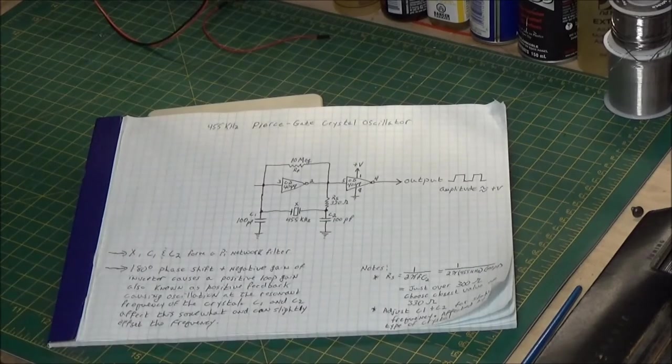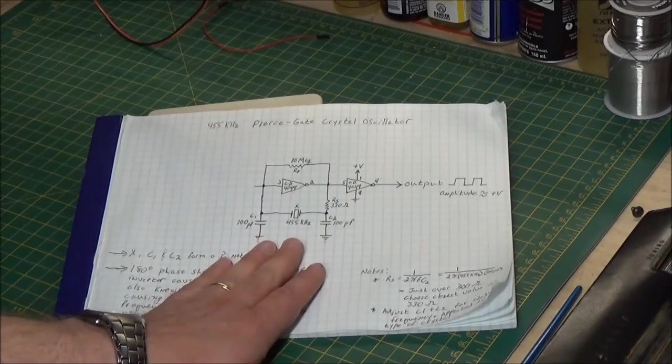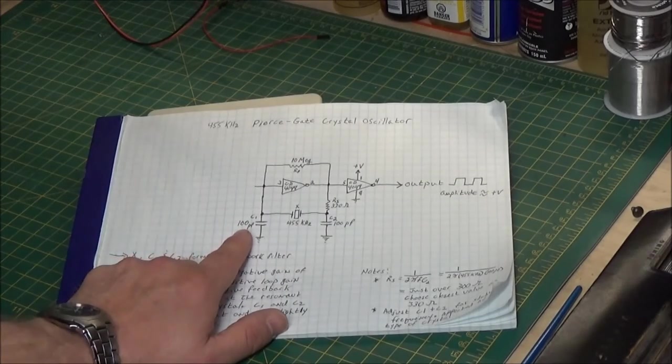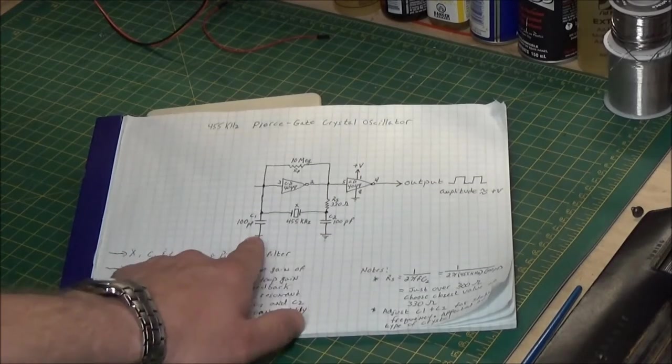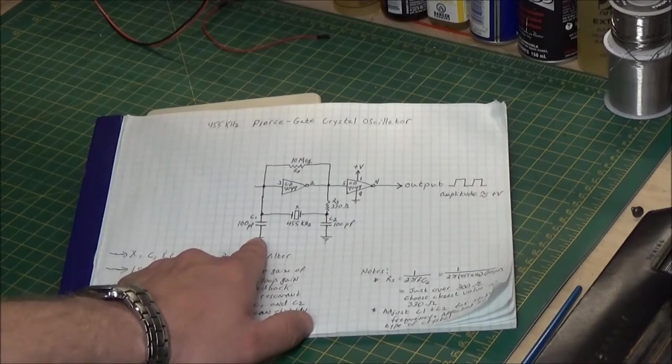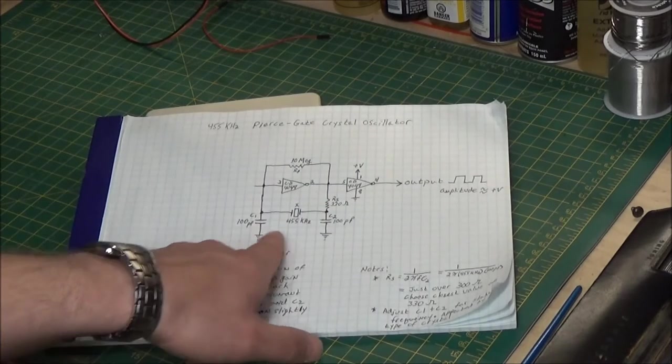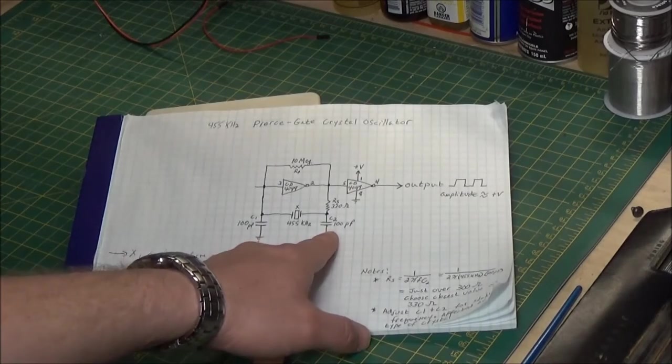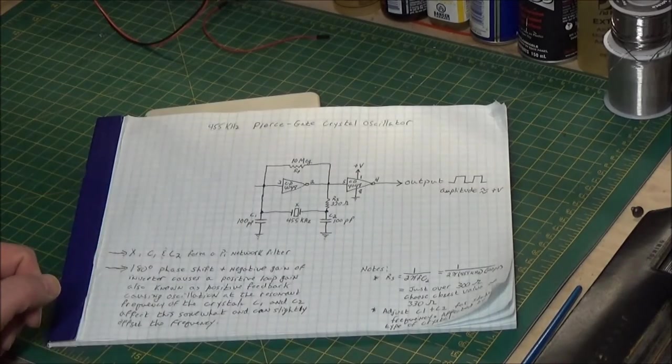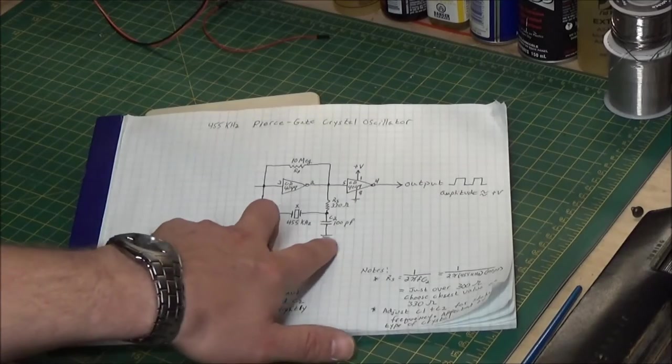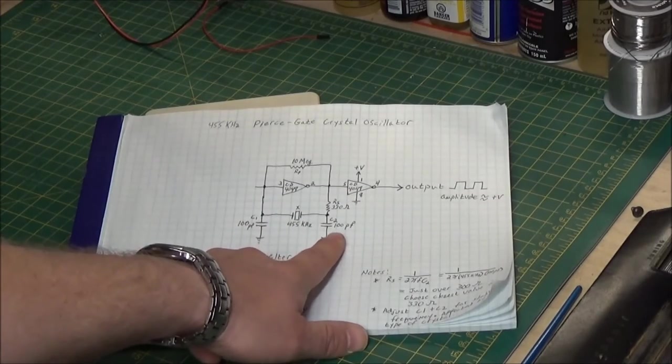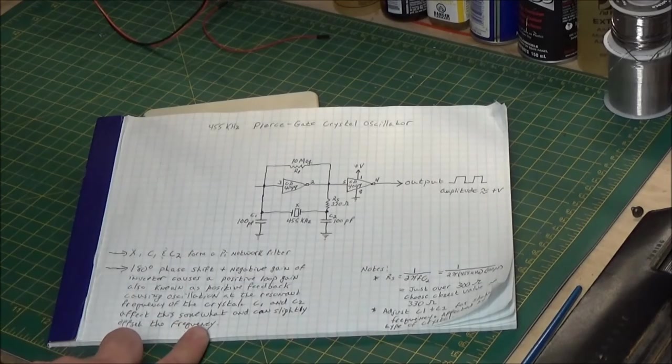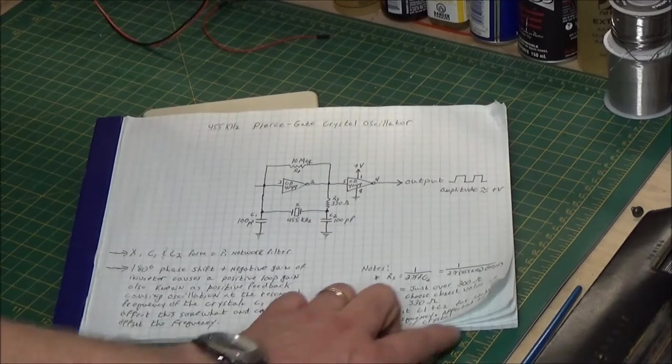If the capacitive reactance doesn't load this down funny, if they match the internal capacitance of the crystal, this whole circuit will oscillate at approximately the resonant frequency of the crystal. This is what you have to experiment with. The higher the frequency of the crystal, the lower the capacitance is going to be on these. If you were up in the megahertz, these would be half of that, anywhere from 20 to 50 picofarads or lower. After experimenting, this seemed to be the sweet spot for this particular crystal.